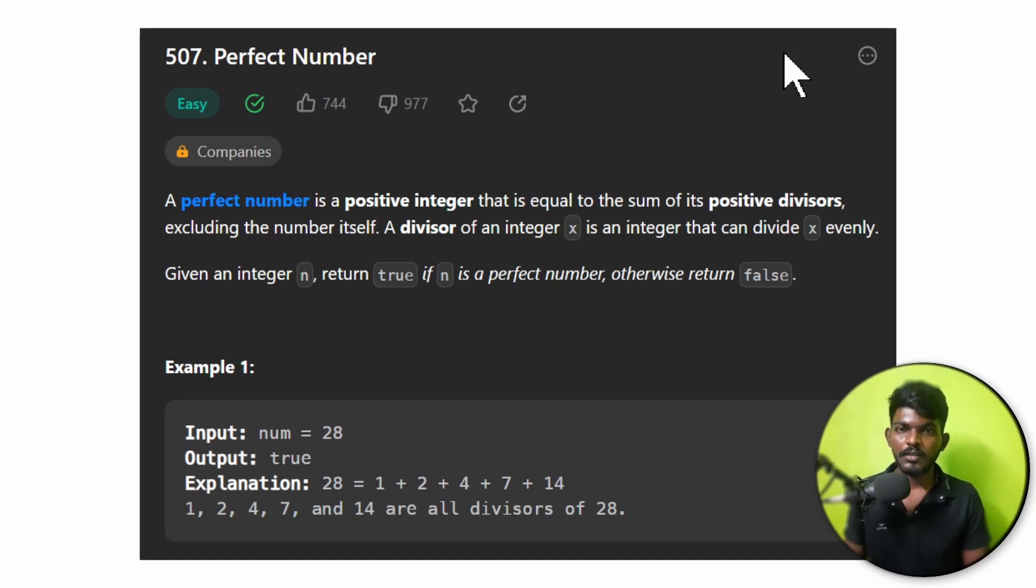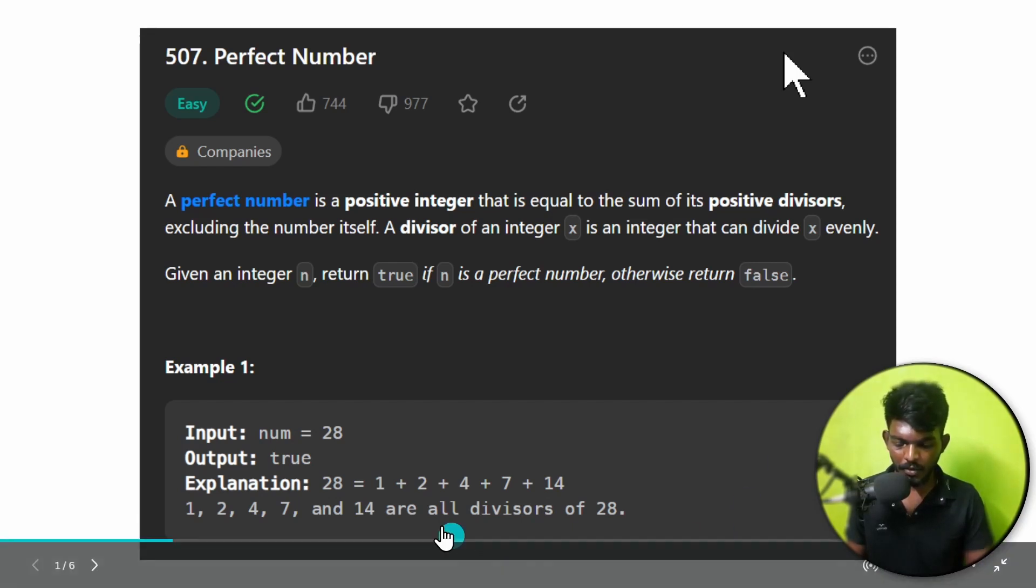A perfect number is generally what we have. If we add divisors to this number, we will get that number. For example, here's 28. The divisors of this number are 1, 2, 4, 7, and 14.